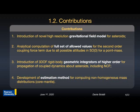In this research there are four main contributions. First, the introduction of a novel high-resolution gravitational field model for small bodies that captures the orbit-attitude coupling effect. Second, the analytical computation of the full set of allowed values for the second-order coupling force term due to all possible orientations of the spacecraft considering a point mass primary. Third, the introduction of a translational rigid body geometric integrator of high order for propagation of coupled dynamics about asteroids including non-conservative forces. Fourth, the development of an estimation method for computing non-homogeneous mass distribution using a core and mantle model for the asteroid.